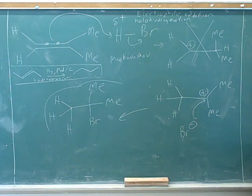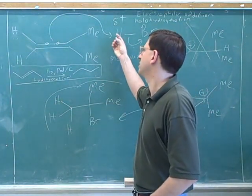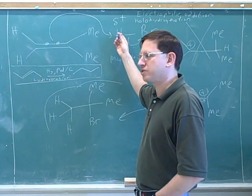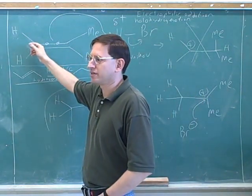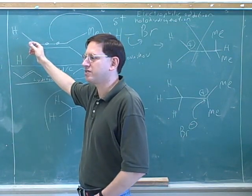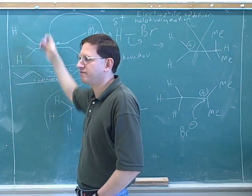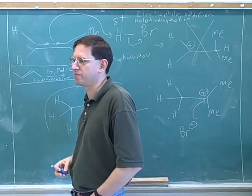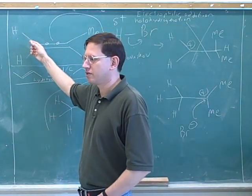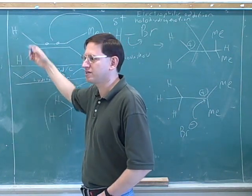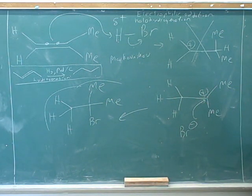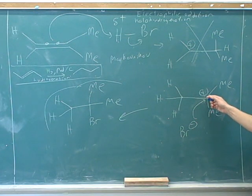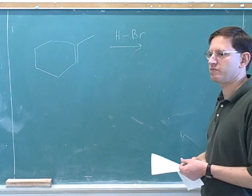Briefly, the stereochemistry is not as important but might be tested. When the hydrogen attacks, it's attacking a trigonal planar carbon, so it can attack from two directions — giving two possible intermediates. That wasn't important here because this was not a stereocenter, but if it had been, we'd need to draw two different intermediates: one where hydrogen attacks from above and one from below. Similarly, when bromine attacks the carbocation — which is also trigonal planar — that also gives two possible products.